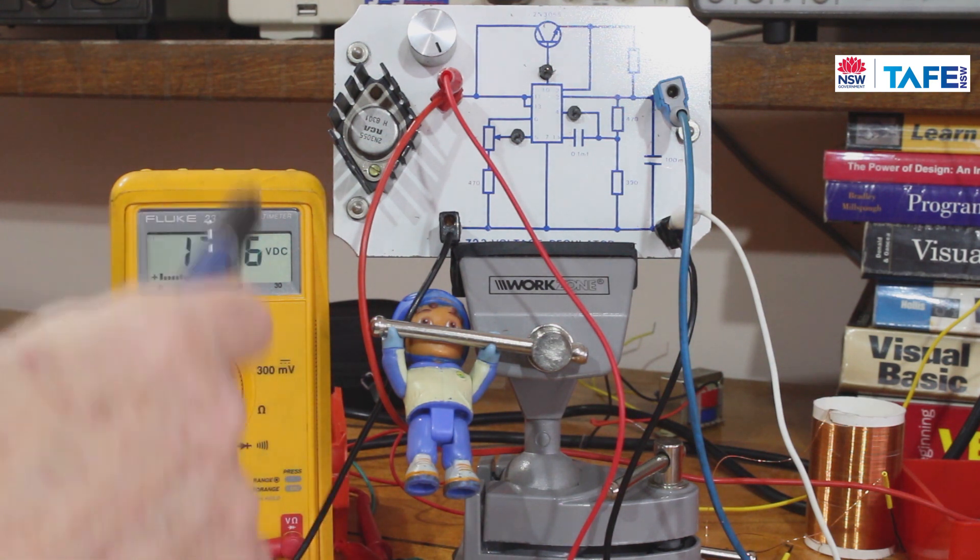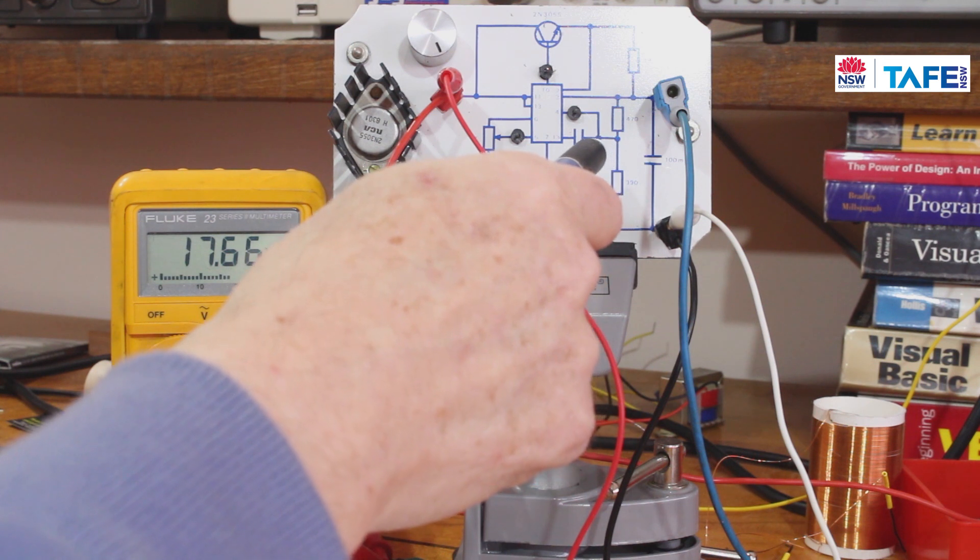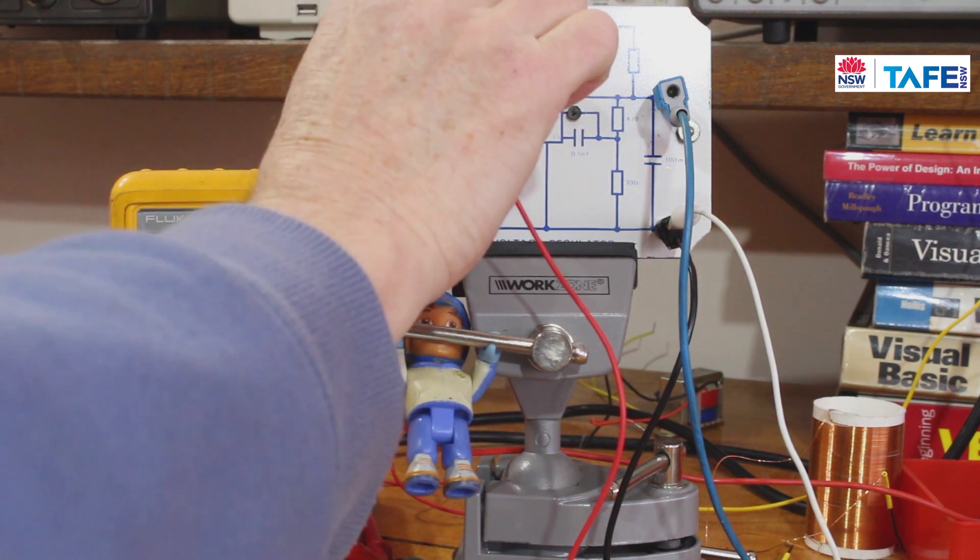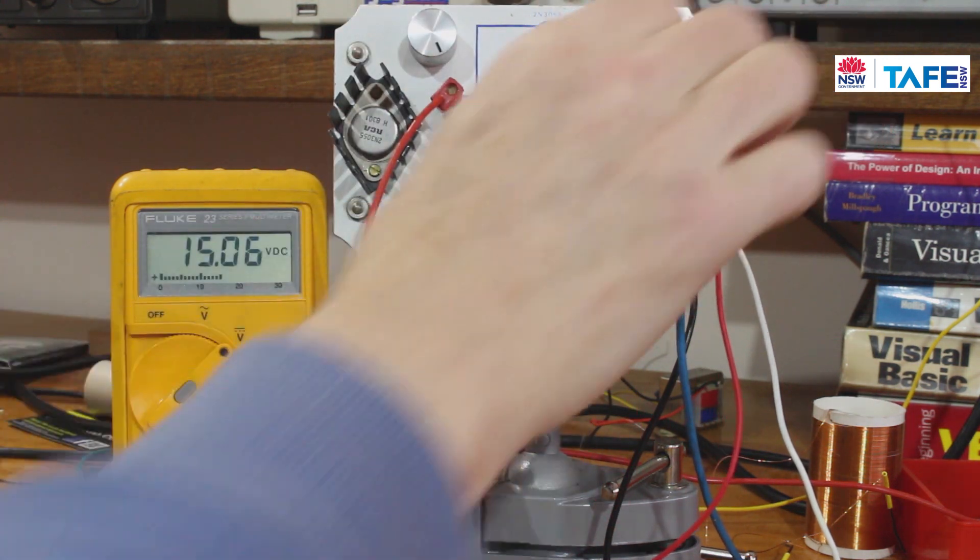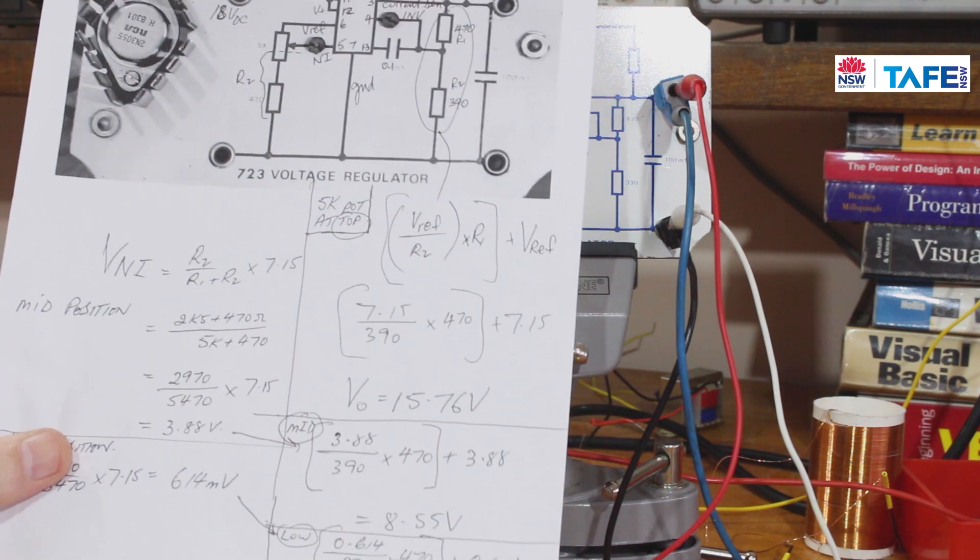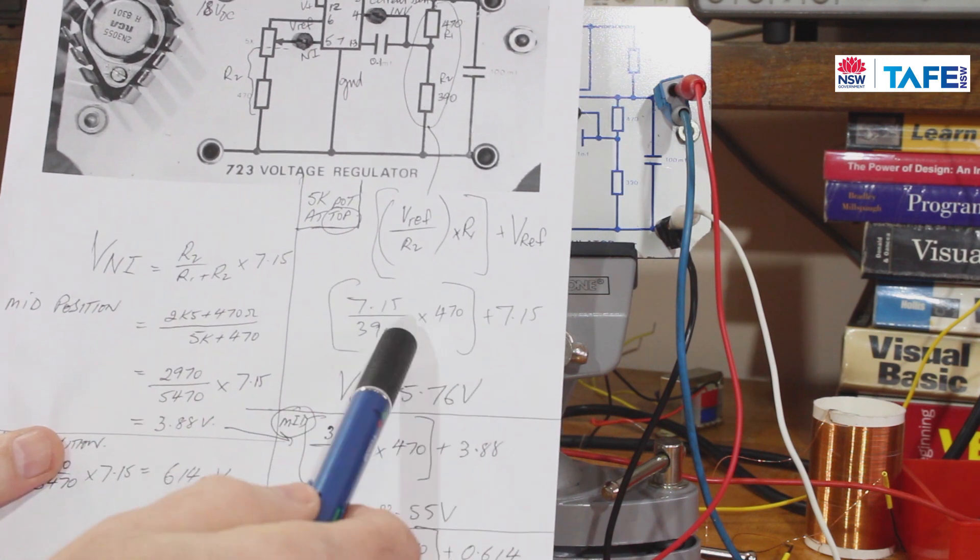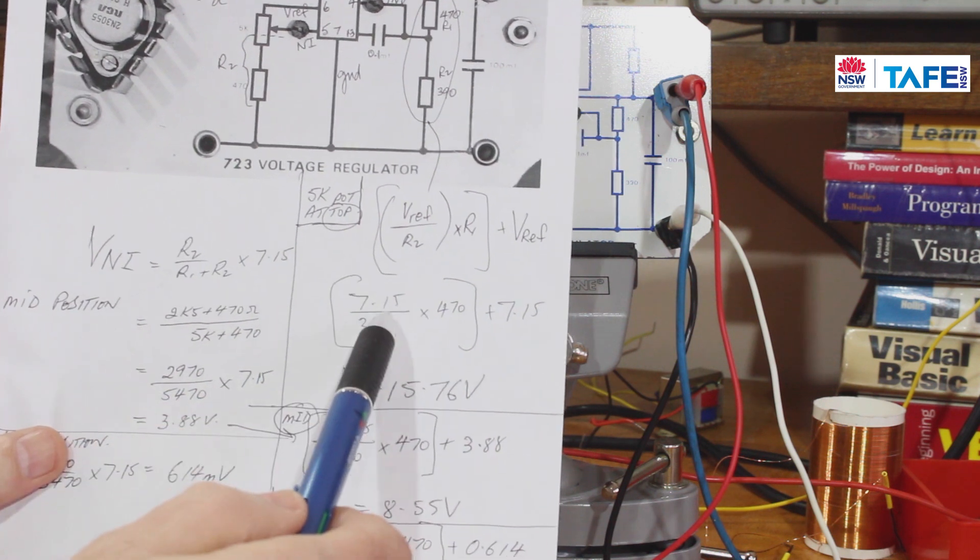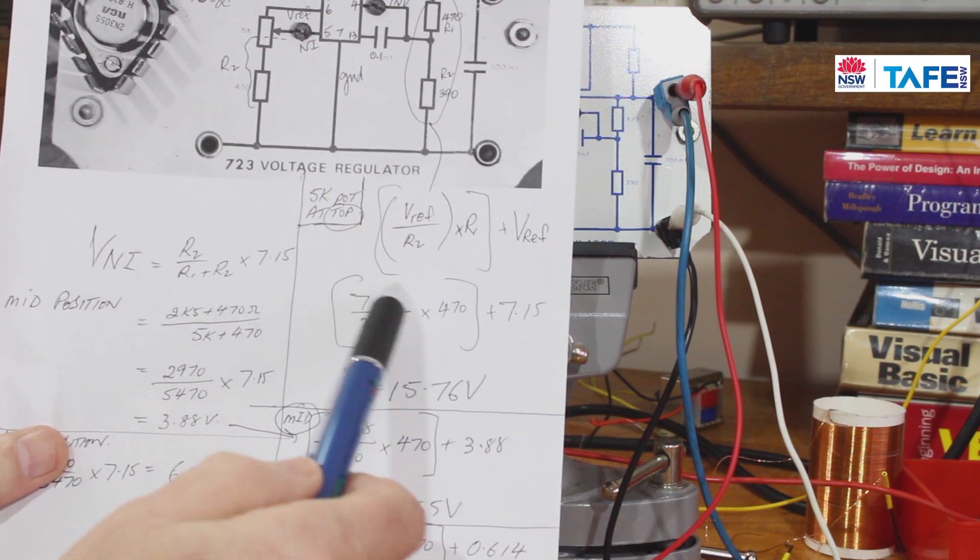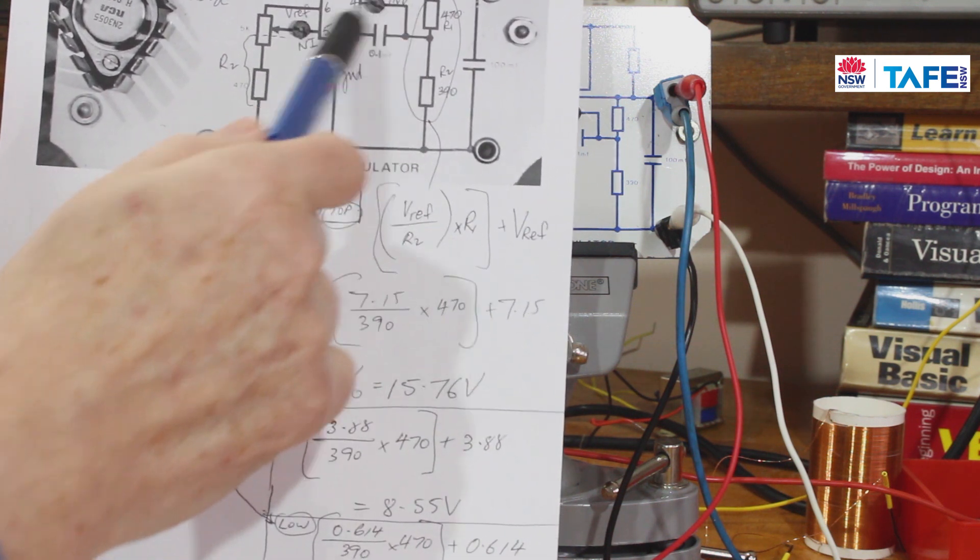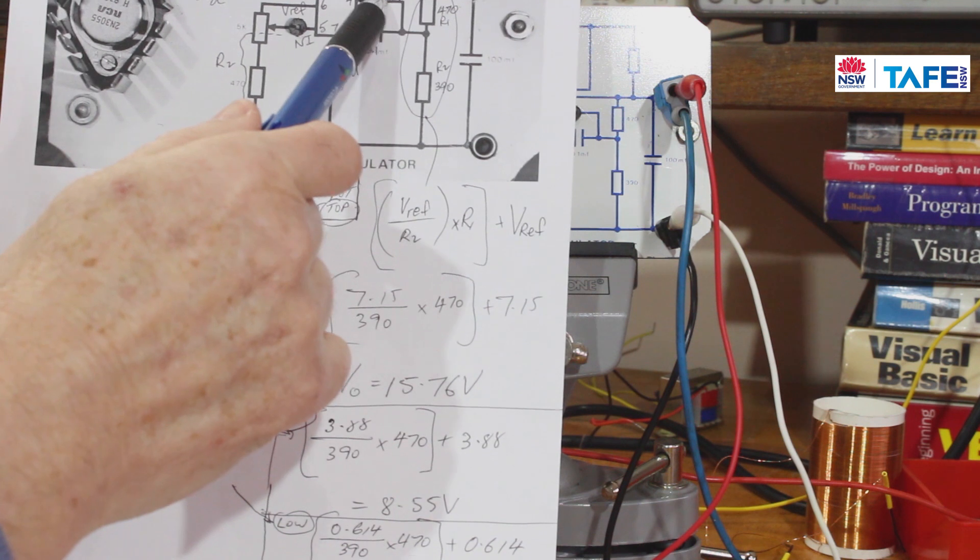So if we go and we look at the output voltage on the board, I've only got 15.57 volts. Now if we look at the maths on that, based on the fact that the wiper is at the top on the 5k resistor and I've got 7.15 volts, I have to say to myself, well I've got 7.15 volts there when the circuit's in balance.